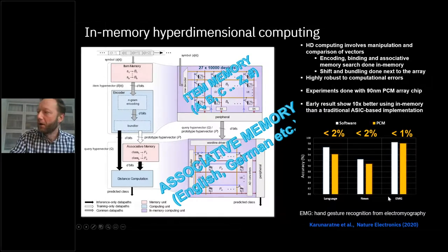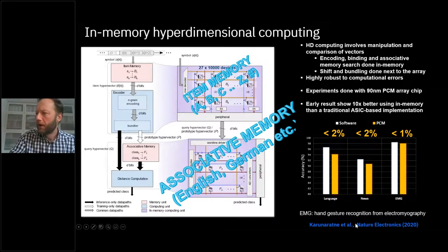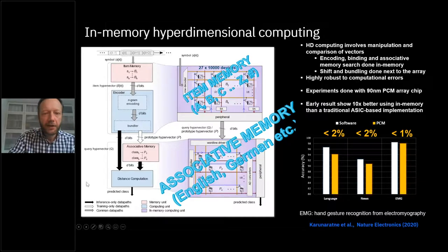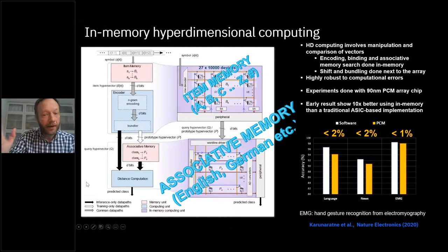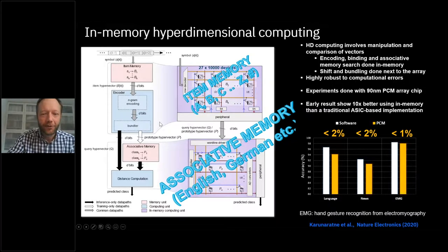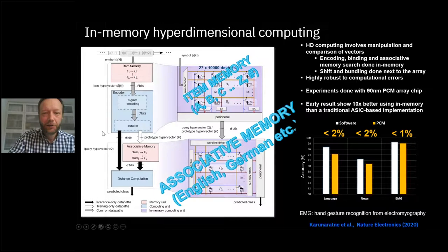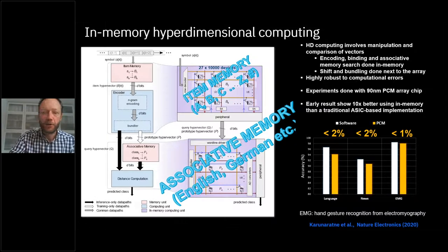We've done this for language classification, and also for classification of news, EMGs, and gesture recognition for electromyography — many use cases you can think of. I highlighted hyperdimensional computing because it's different from deep learning; it doesn't use deep neural networks but a different concept that also takes advantage of the in-memory computing substrate in a very advantageous fashion.